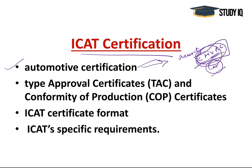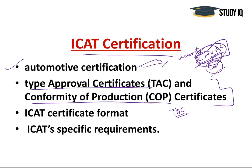These certificates include two kinds: TAC, which is the Type Approval Certificate, and COP, which is the Conformity of Production Certificate. The Type Approval Certificate is granted to a product that meets a minimum set of regulatory, technical, and safety requirements. Vehicles which comply with the Central Motor Vehicle Act regulations are given TAC. This certificate is mostly required before a product is allowed to be sold.